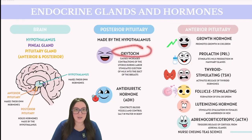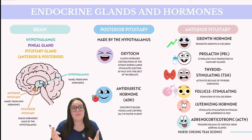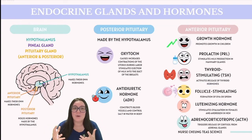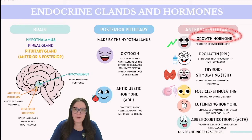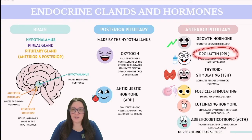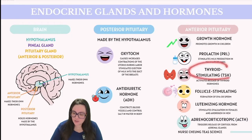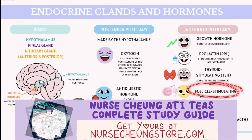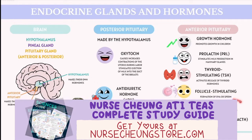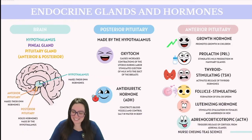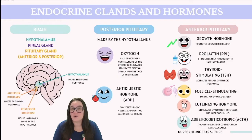Unlike its counterpart, the posterior pituitary does not produce its own hormones. Instead, it secretes hormones like oxytocin, which is crucial for uterine contractions during childbirth, and antidiuretic hormone, also known as ADH, which promotes the kidneys to reabsorb water. The anterior pituitary, however, is a hormone powerhouse — capable of producing its own hormones while still being tightly regulated by the hypothalamus. Key hormones include growth hormone, prolactin (PRL) which stimulates milk production, thyroid stimulating hormone, follicle stimulating hormone, luteinizing hormone, and adrenal corticotropic hormone (ACTH), which drives the adrenal cortex to release hormones like cortisol.